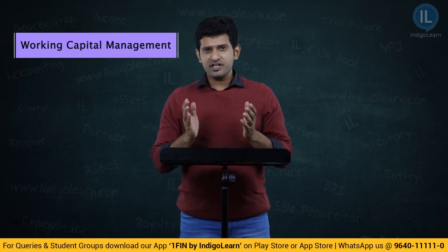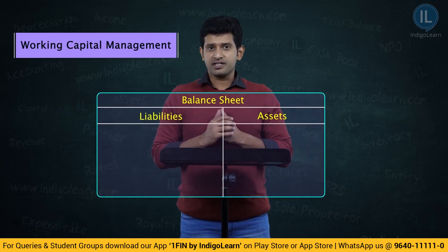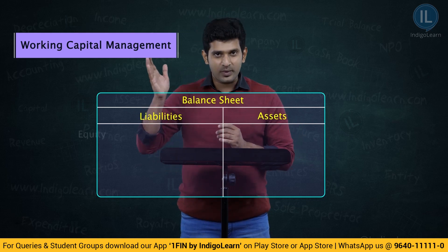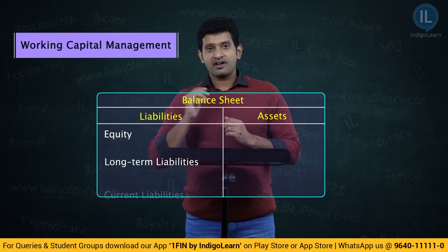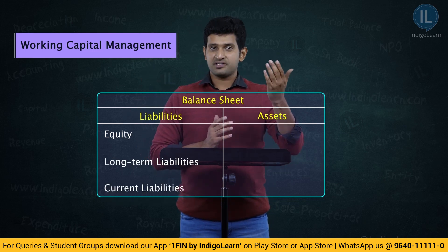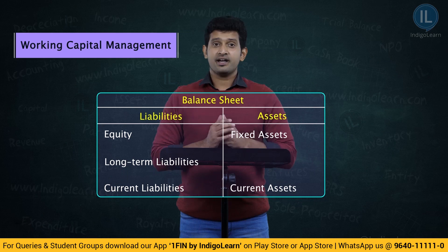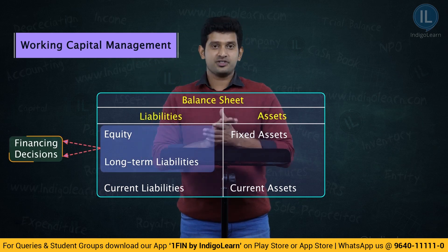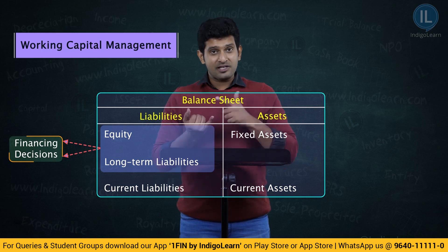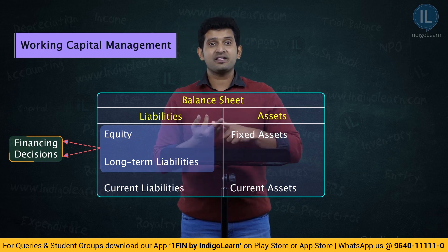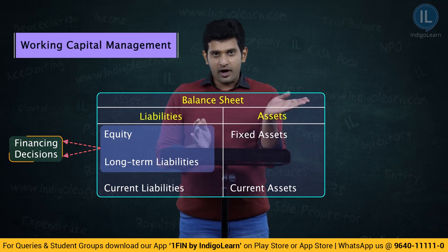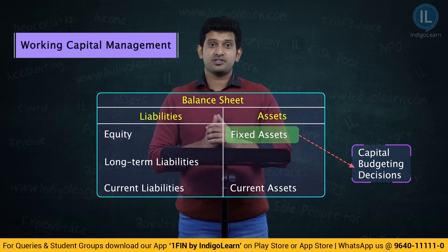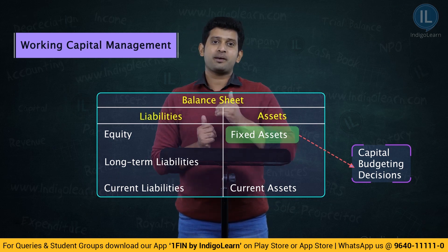In the syllabus of financial management, we have seen various decisions till now. If you understand the balance sheet in a horizontal way, we said we have equity and long-term liabilities, below that we have current liabilities, then on the asset side we have fixed assets and current assets. The study of equity and long-term liabilities is called financing decisions, wherein we understood the concept of capital structure decisions and cost of capital combined with leverages. Moving on to the asset side, the study of investments and fixed assets is called capital budgeting decisions. We also saw the risk analysis and capital budgeting decisions.